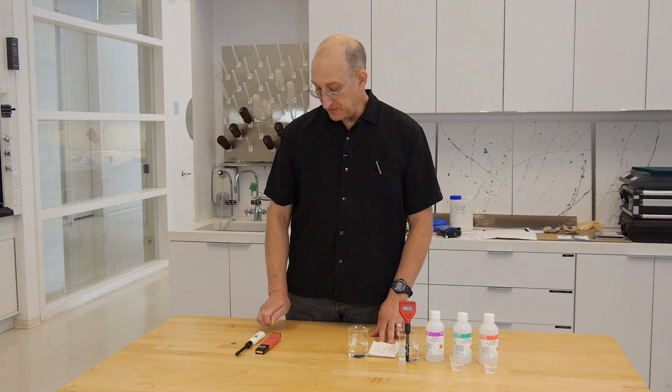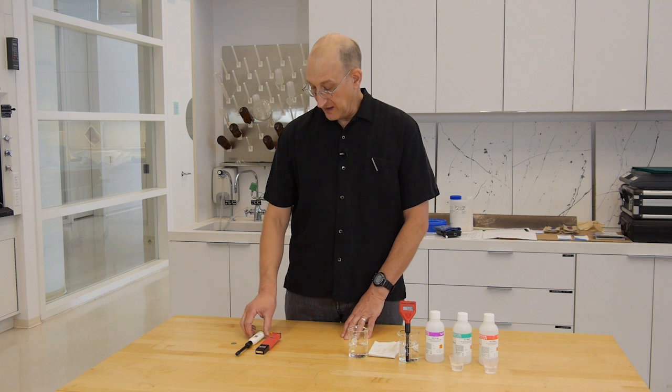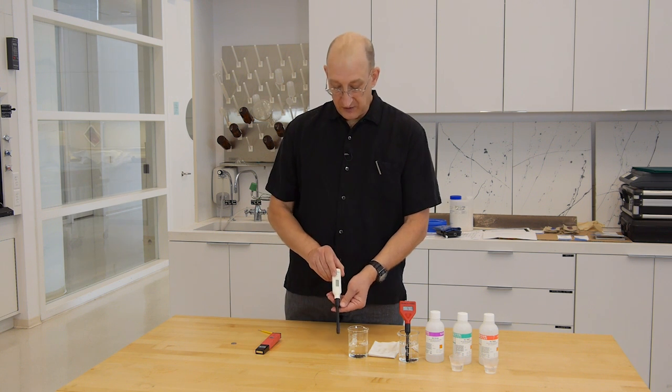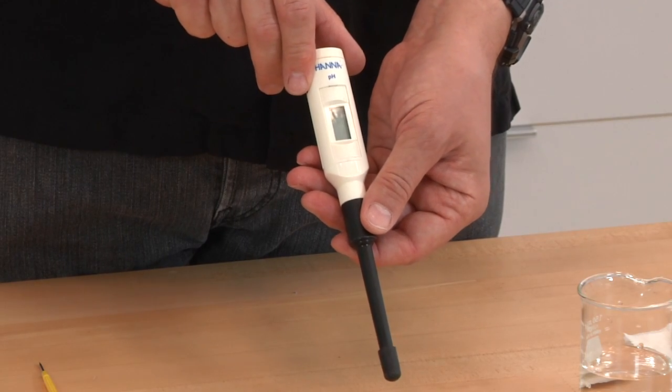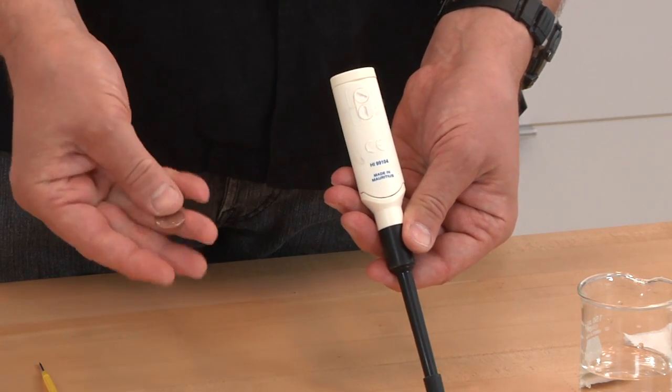There are a couple other style pH meters. We always want to get a pH meter that calibrates to two decimal points. There is this style HANA meter, which is currently the cheapest on Amazon.com. This calibrates with a dime in these two little wells.